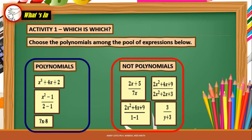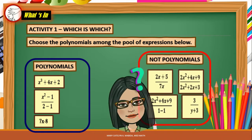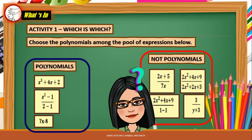In Activity 1, you were able to identify the expressions which are polynomials and which are not. Take note that all polynomials are algebraic expressions, but not all algebraic expressions are polynomials. So, what do you call those expressions which are not polynomials?